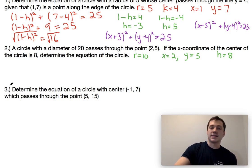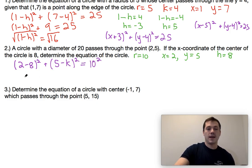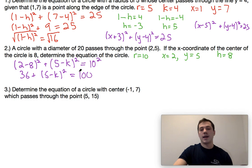Once again, we're just going to go ahead and plug this into the equation at the top. So we would have 2 minus 8 squared plus 5 minus k squared is equal to r squared. 2 minus 8 is negative 6. When I square that, I would end up with 36. Again, 5 minus k squared is equal to 100. Subtract 36 over to the other side, so we would then end up with 5 minus k squared is equal to 64.